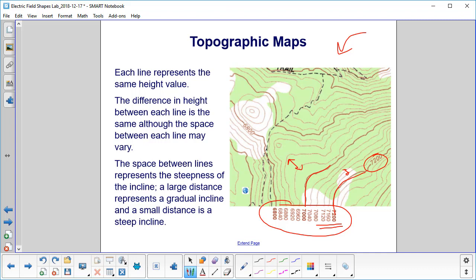The space between these lines represents the steepness of the incline. A large distance represents a gradual incline, and a small distance is a steep incline.